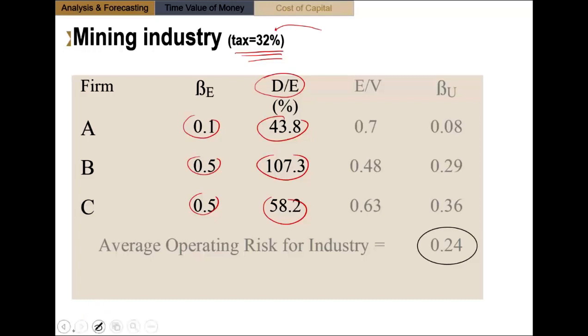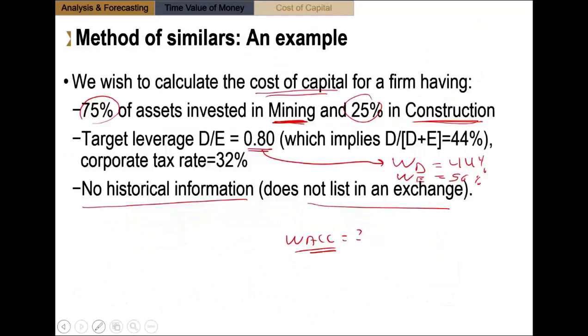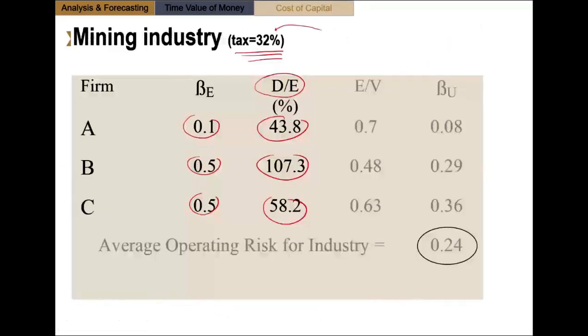Don't forget that what we want is, what is our optimal capital structure? It's 80%, a D over E of 0.8, or saying it differently, a W sub D of 44%. And notice that this is different than the D over E's that you see for the companies that we're borrowing the betas from. This is why we're going to remove this. How do we remove this? We convert all of these equity betas to unlevered betas.